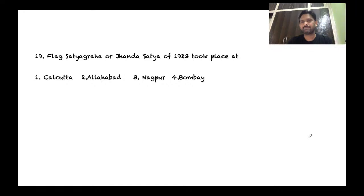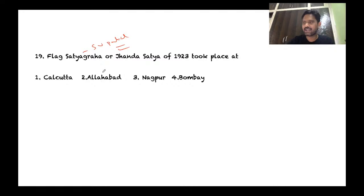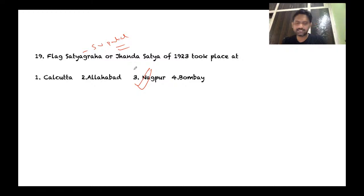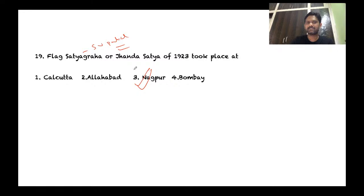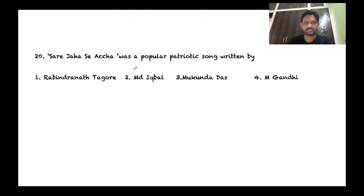Question 19: The Flag Satyagraha or Jhanda Satyagraha of 1923 took place at which place? The Flag Satyagraha was organized by prominent leaders of the Indian National Movement, most prominently Sardar Vallabhbhai Patel. It was organized in Nagpur. The leaders demanded the hoisting of the national flag on prominent buildings, which was opposed by the British, leading to several rallies. This was an important event following the Non-Cooperation Movement.